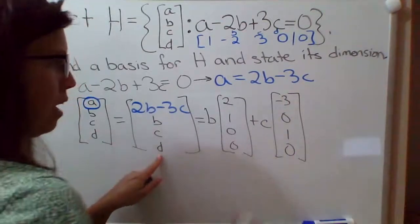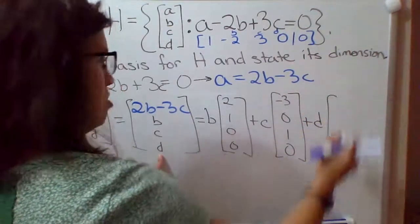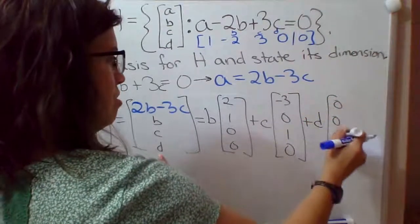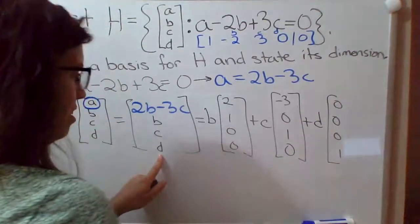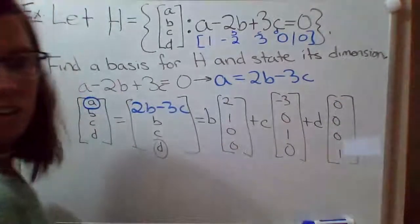So I'm just writing the coefficients of B, and then the coefficients of C, and then I also have the free variable D. So D times the vector 0, 0, 0, 1. The only D I have is here, and its coefficient is 1, so there's your D vector.